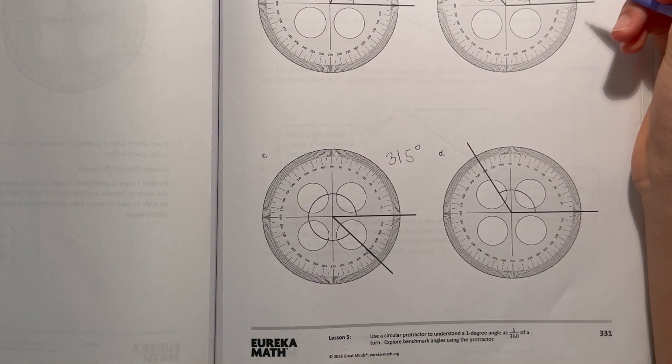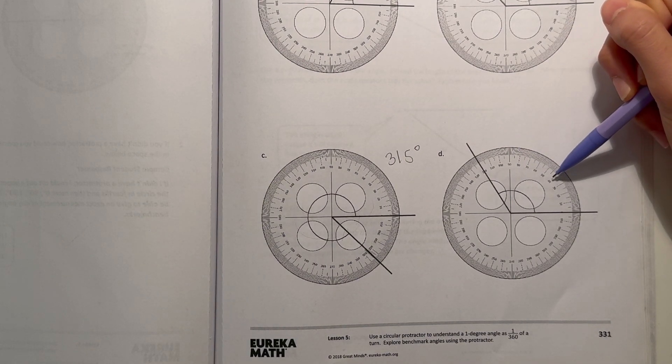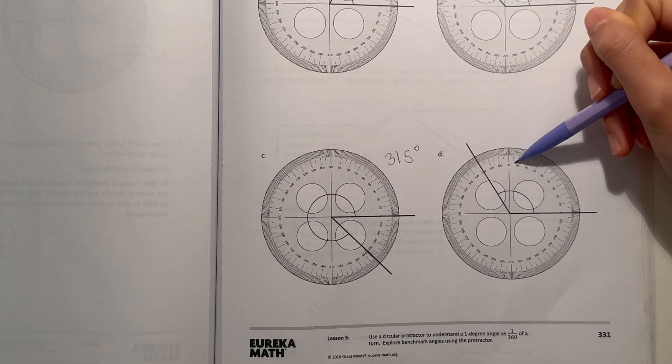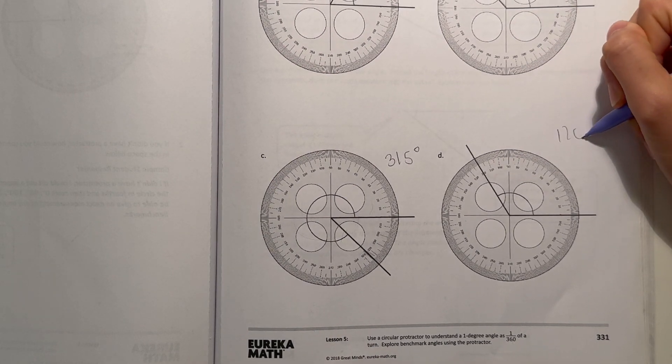All right, now let's look at D. 10, 20, 30, 40, 50, 60, 70, 80, 90, 100, 110, 120. It's just 120 degrees.